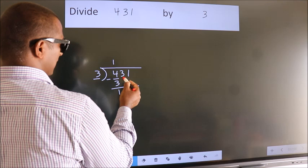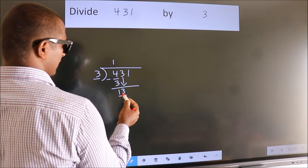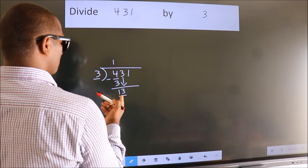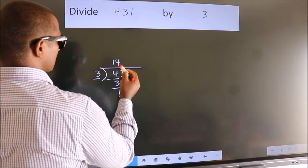After this, bring down the beside number. So, 3 down. So, 13. A number close to 13 in 3 table is 3 4s 12.